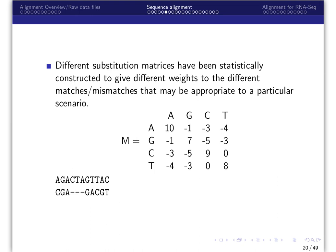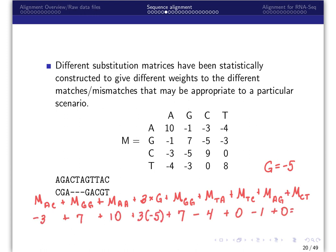Different substitution matrices have been statistically constructed which give weight to different actions appropriate to a particular scenario. Again, let's let the gap penalty be negative 5. Now the score for this specific alignment would be given by the same equation, but the values translated into the equation differ, and thus the sum differs.